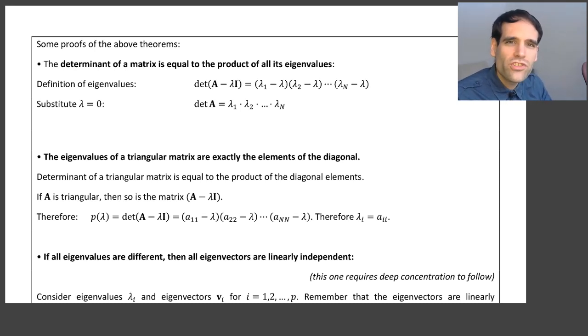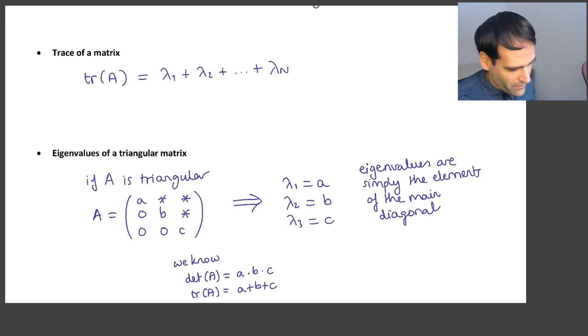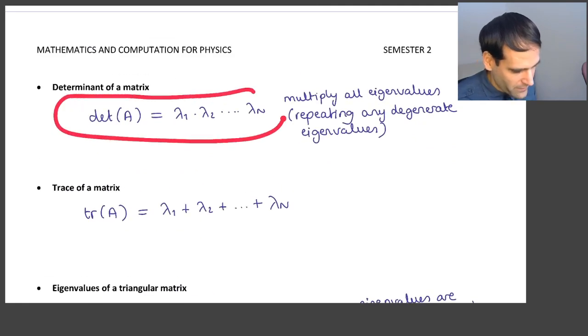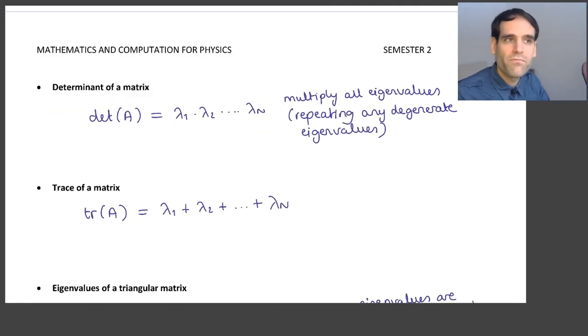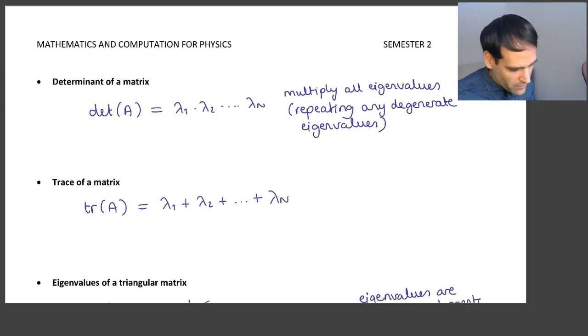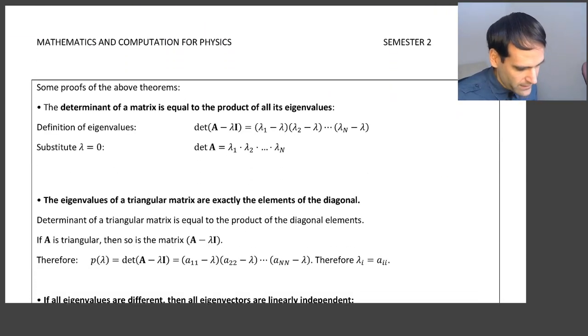In this video, I'm going to show you some mathematical proofs for some of the statements that we just said about eigenvectors and eigenvalues. For example, I very happily said that the determinant of a matrix is equal to the product of all the eigenvalues. How can I prove this? Actually, the proof is short, elegant, and simple.